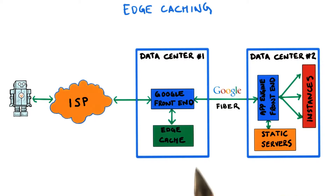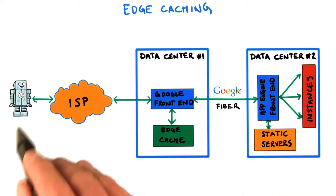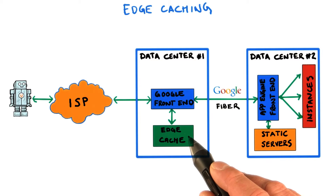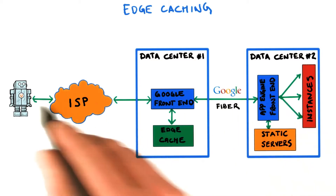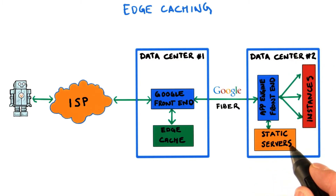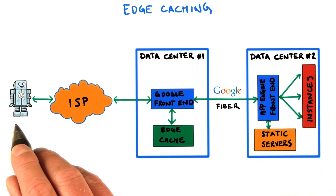Edge caching is a cache that sits in the data center closest to the user. So whenever there is a request, the result can be served directly from the cache if it's available there, rather than going through data center 2. That means less load on data center 2 and your application, and faster responses to your users. A win-win.